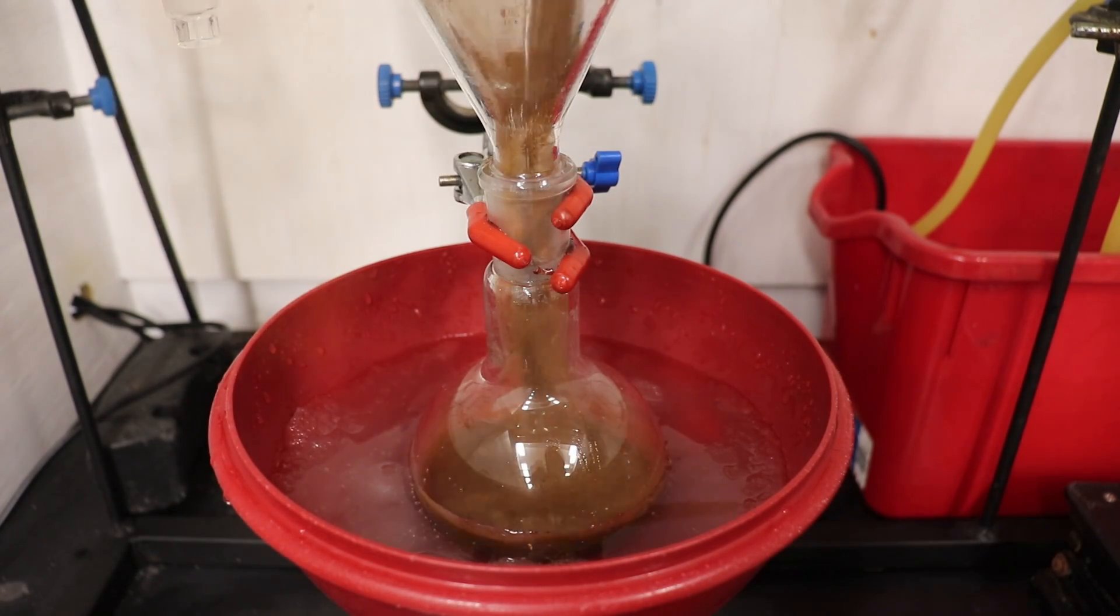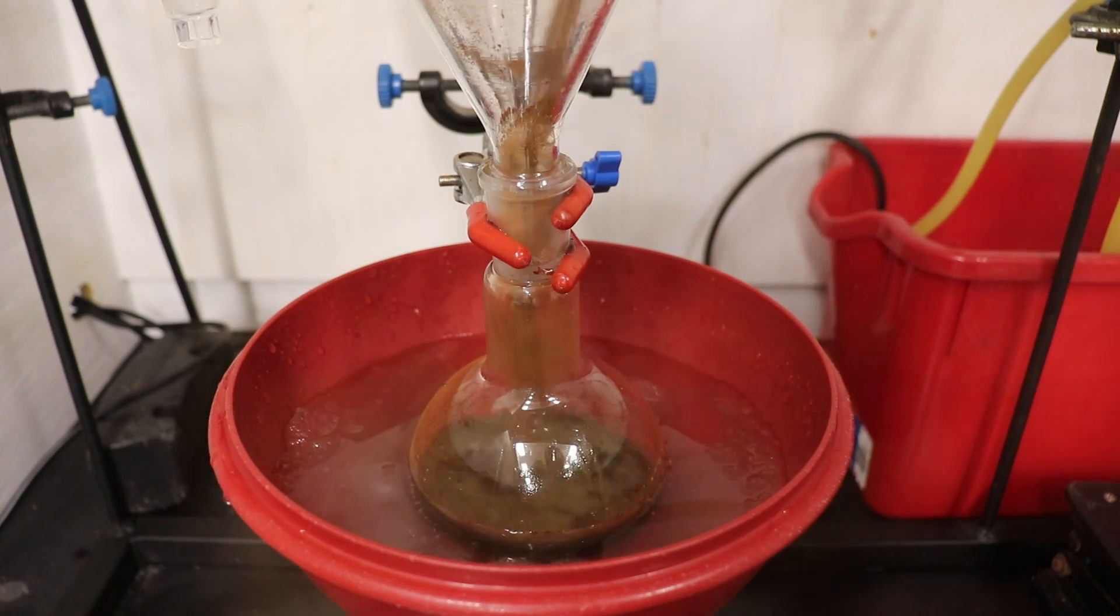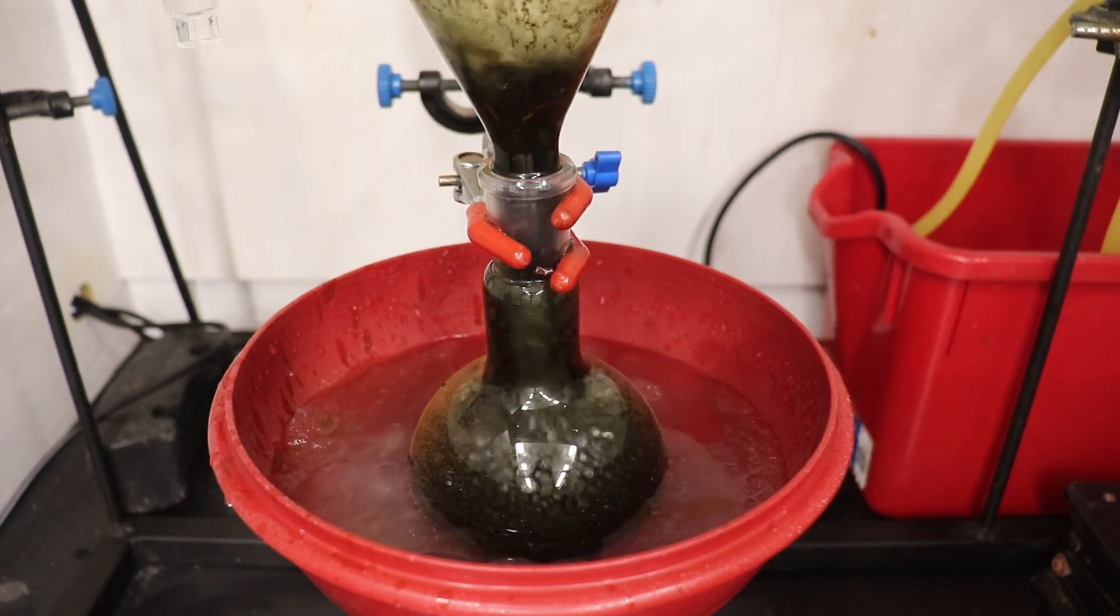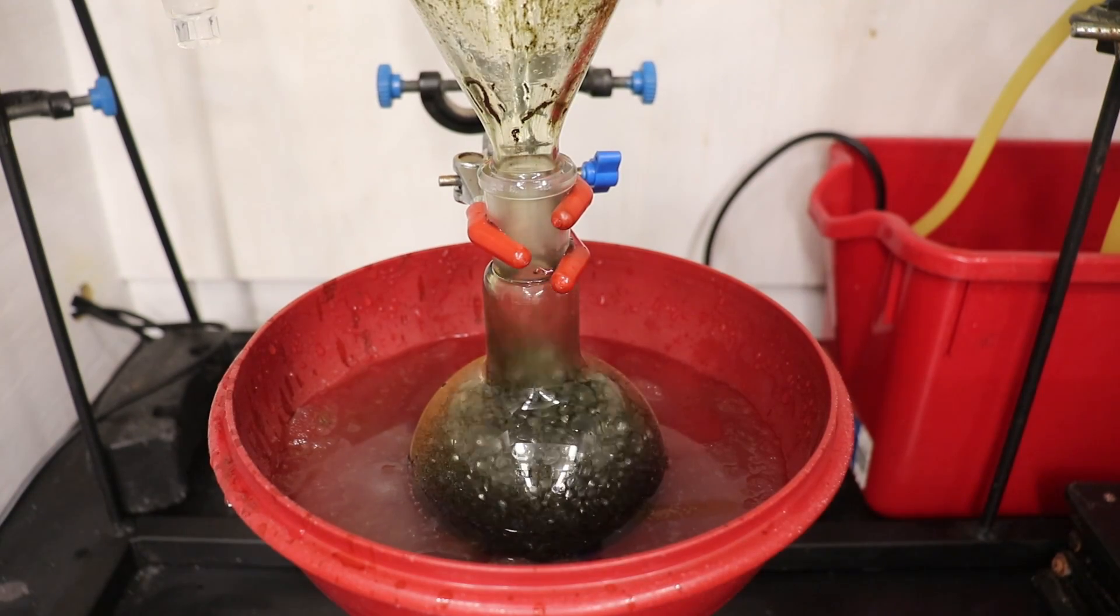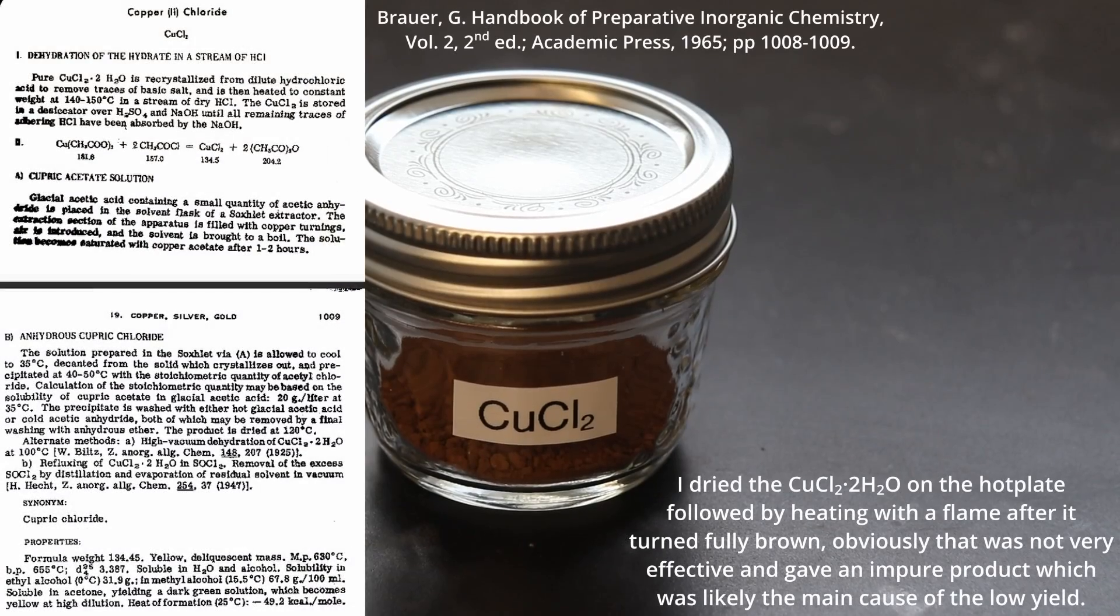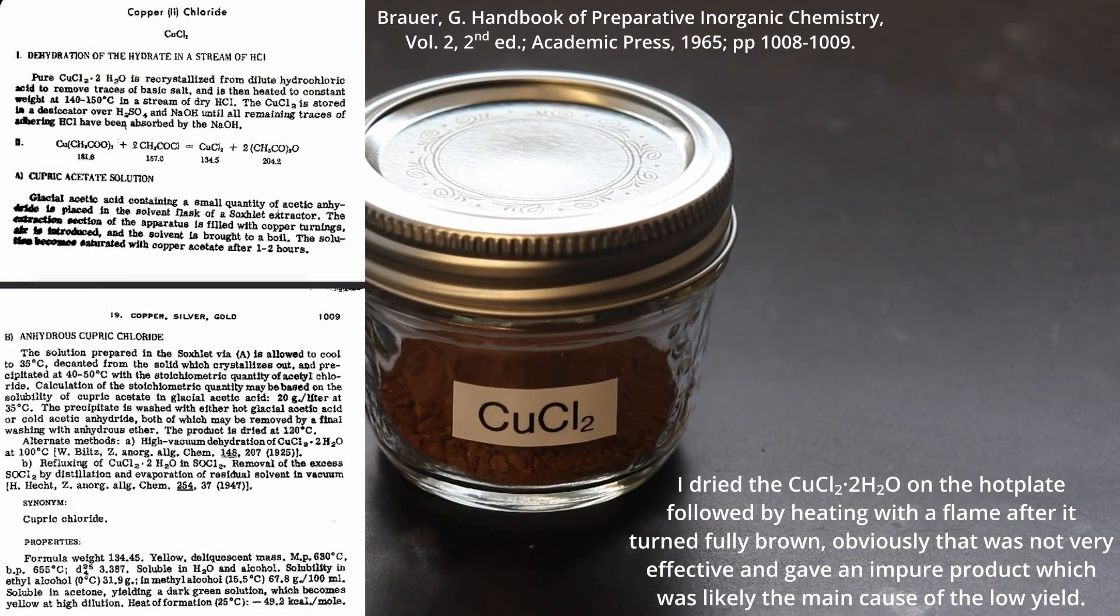Now we can look at the most obvious mistake, which was the rapid addition of the copper chloride leading to the exotherm that splashed some of our product out of the flask. However, it seemed that only a few mils of the solution escaped, so this should only be a single digit loss of yield at most.